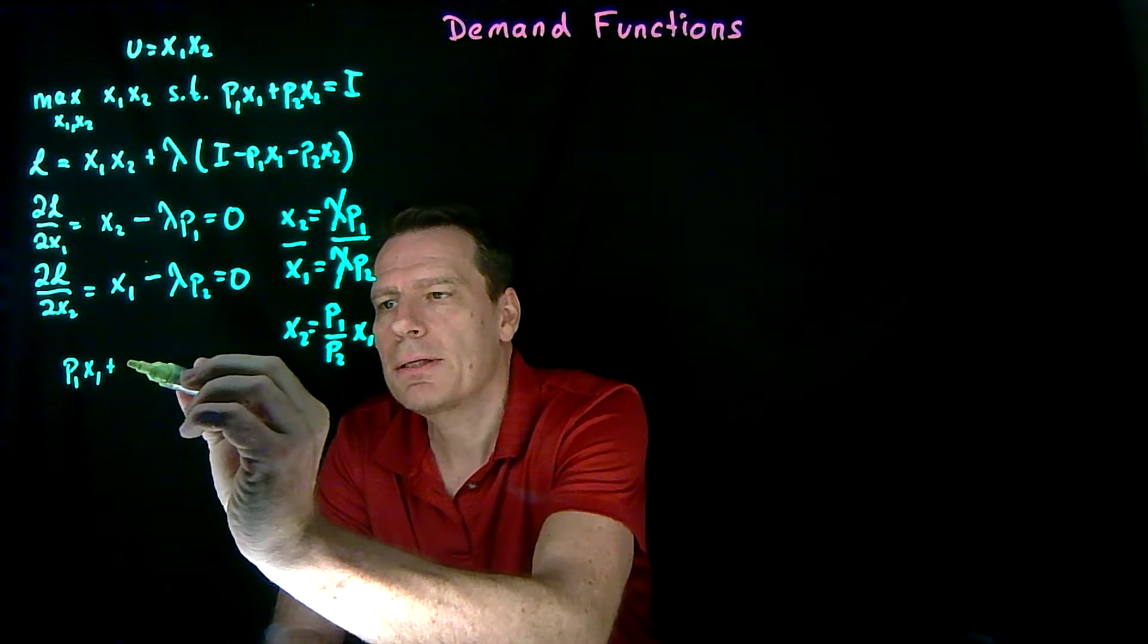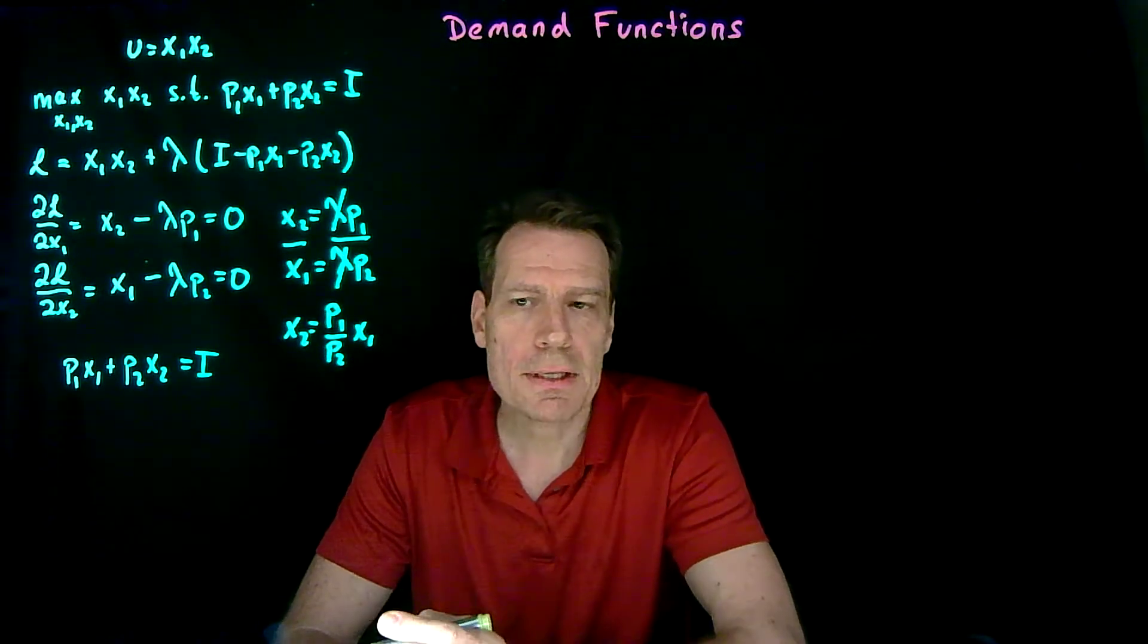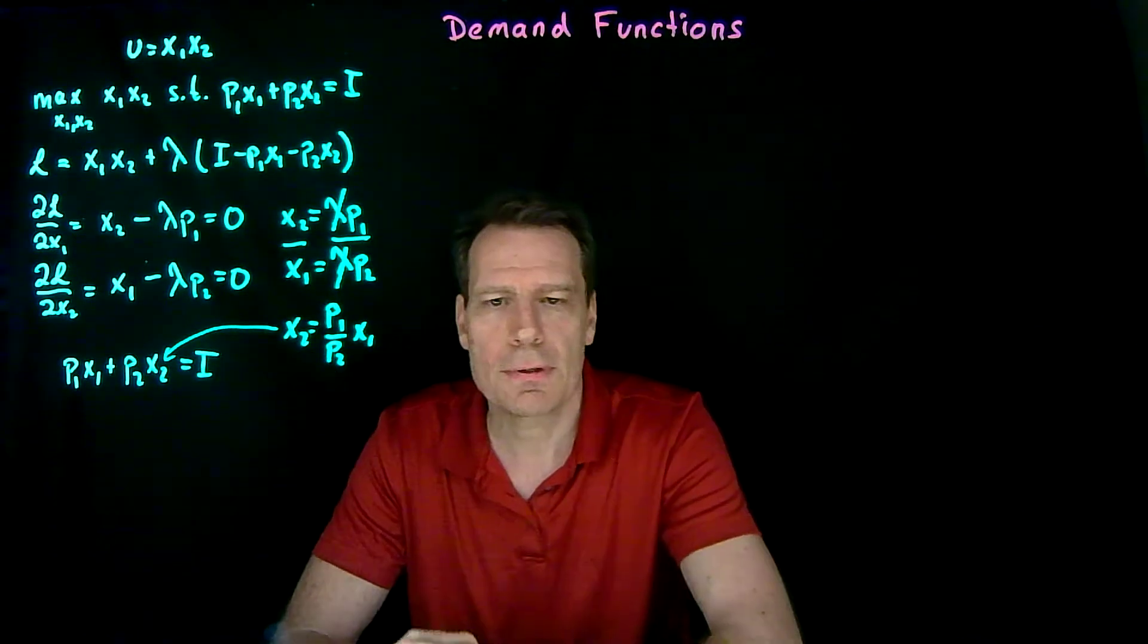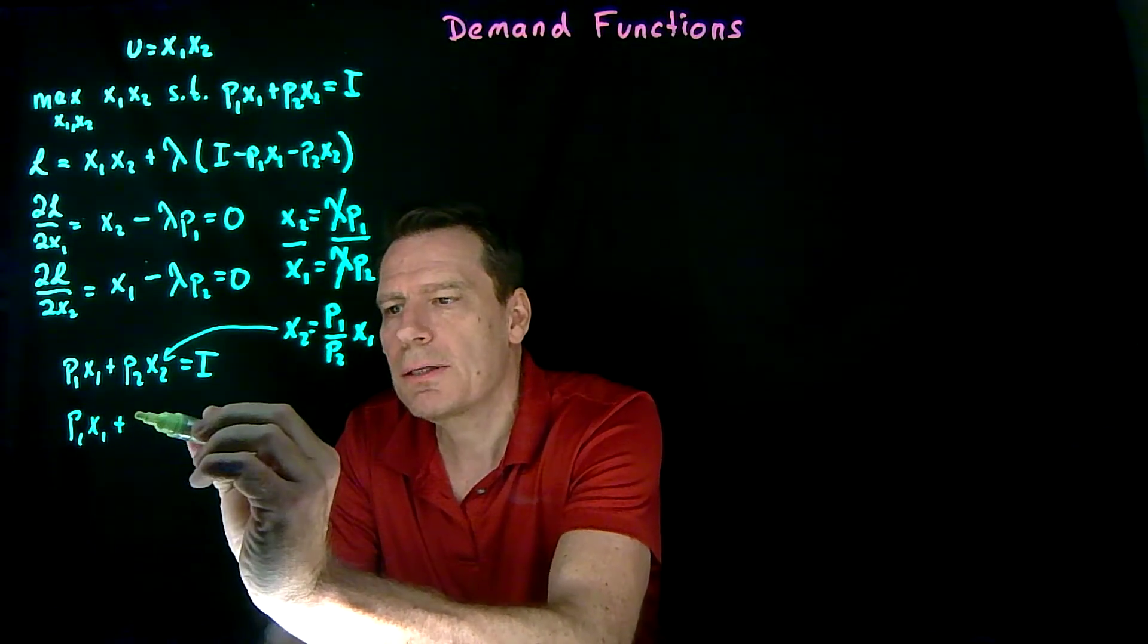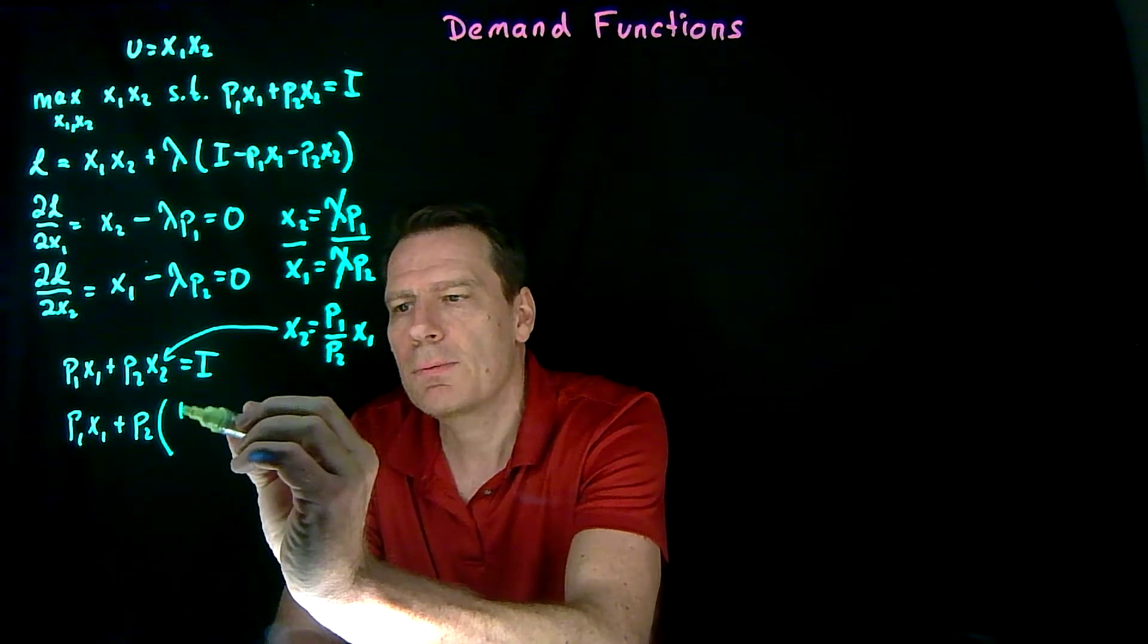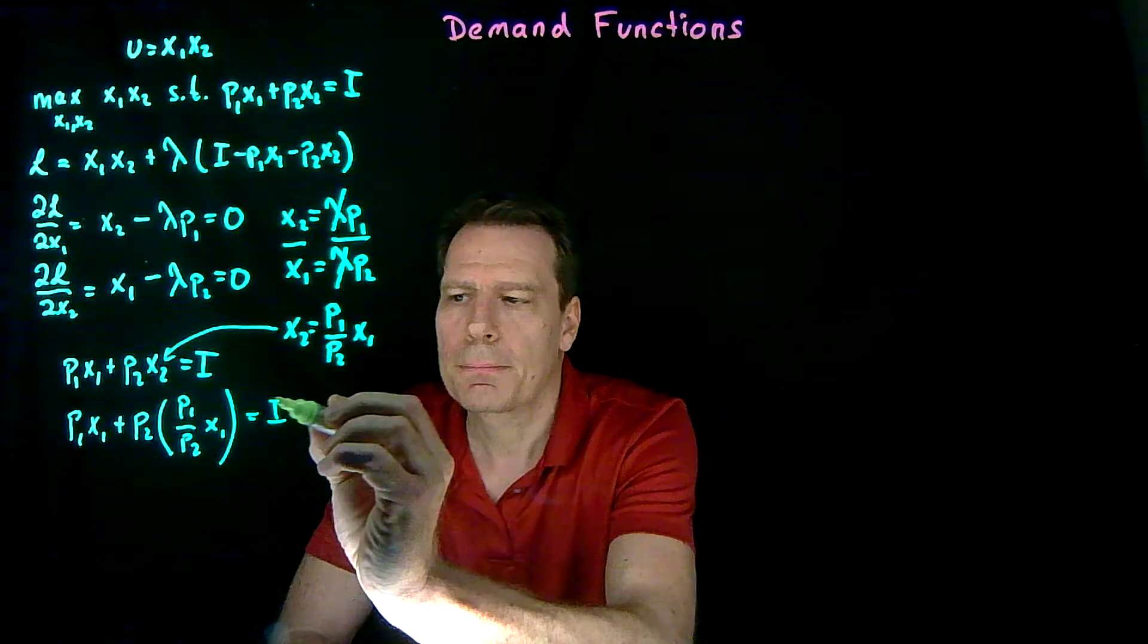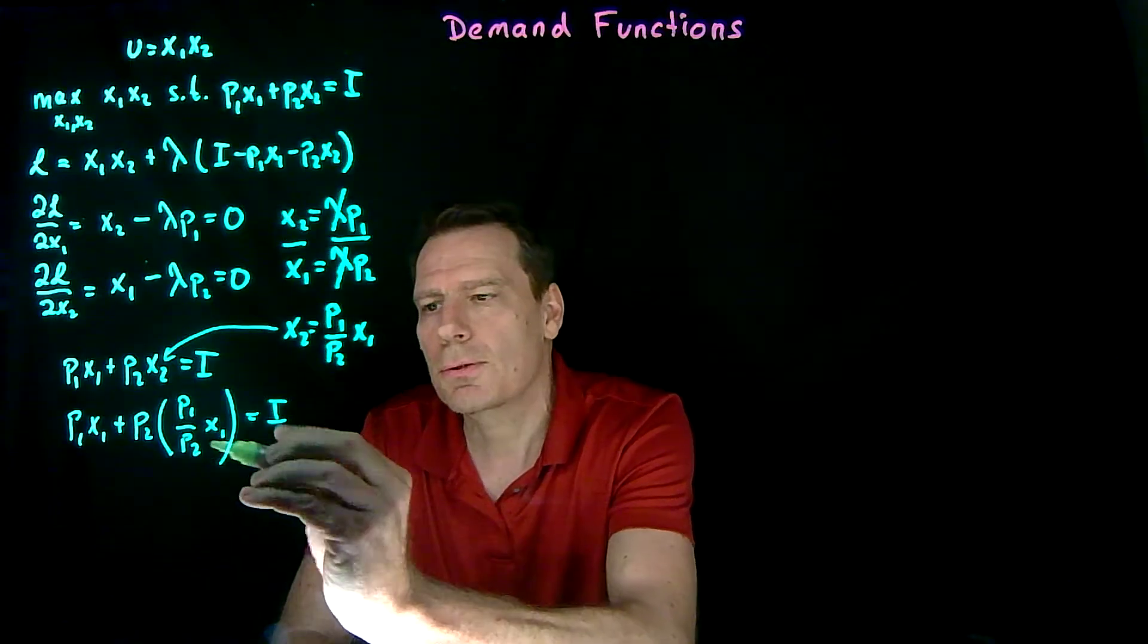p1 x1 plus p2 x2 is equal to i. Since we have an expression for x2 that's just a function of the prices in x1, we can substitute it in for this x2. So then we get p1 times x1 plus p2 times p1 over p2 times x1 is equal to income. Now we have a p2 in the numerator and denominator, so they cancel.